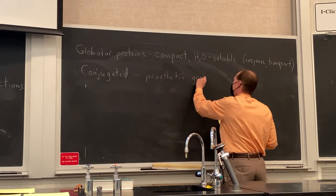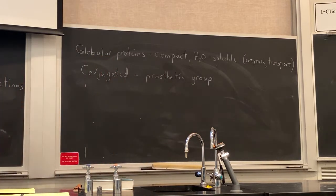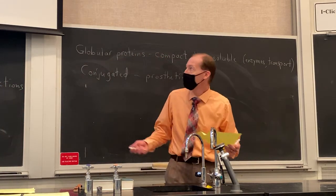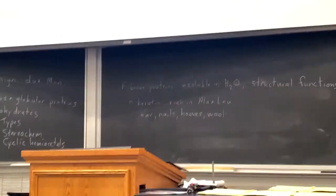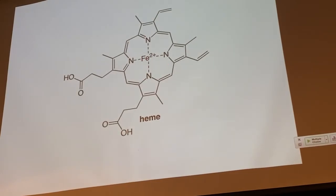Conjugated proteins have prosthetic groups that are usually involved in the chemistry the protein is performing. One of the most common and prominent prosthetic groups is the heme group. Heme has four nitrogen heterocycles arranged in a macrocyclic structure, providing a Lewis basic cavity that allows a Lewis acidic iron dication to associate via Lewis acid-base interactions. The carboxylic acids coming off the side allow it to covalently bond to the protein, usually through amide bonds formed with lysine side chains.